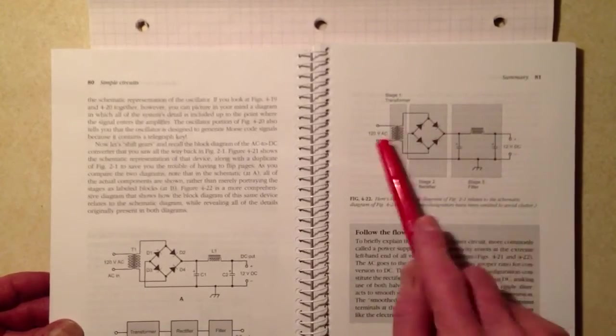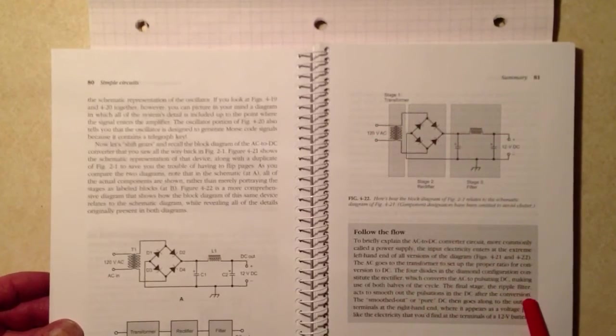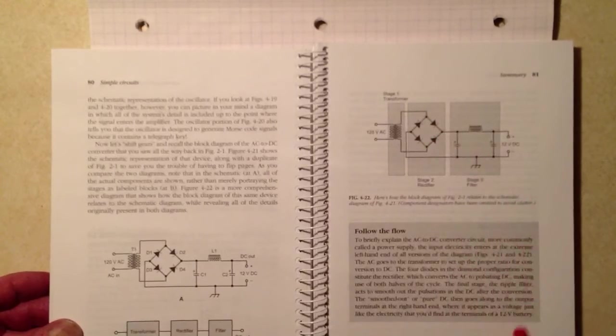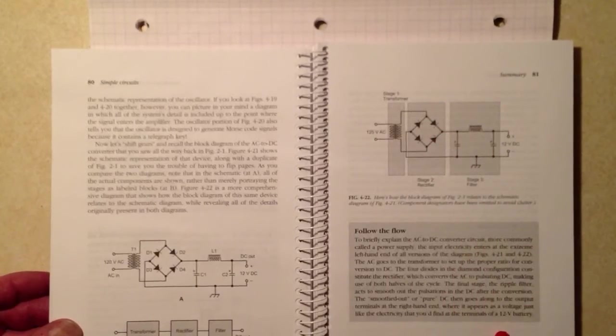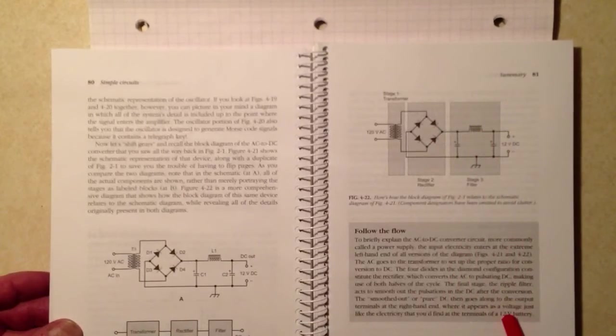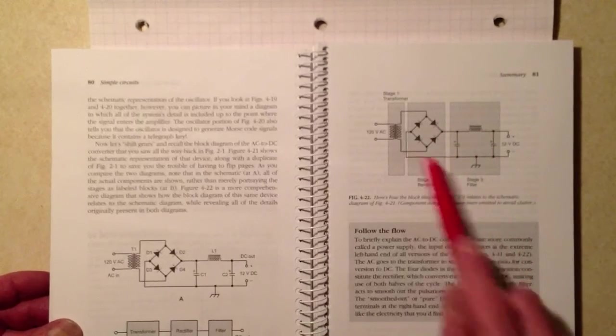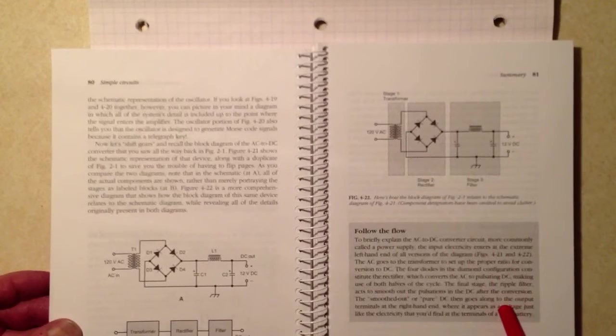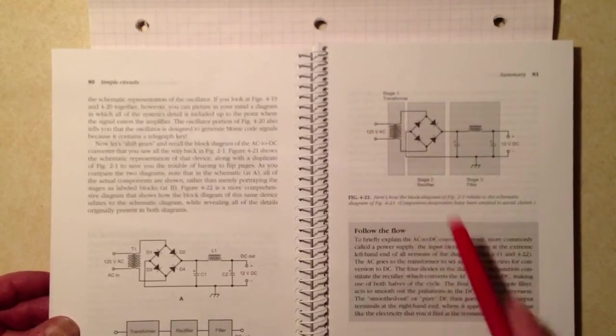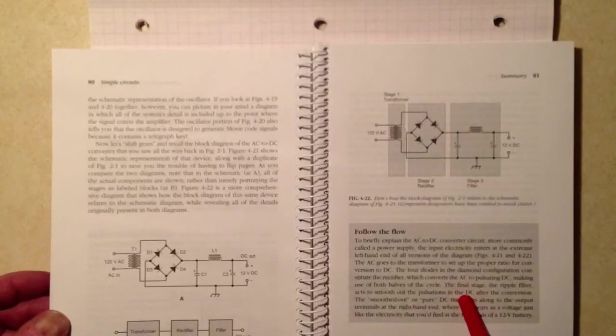There's a little blurb down here called Follow the Flow, which explains how the currents flow through here. This is a bridge rectifier. If you've been watching all of these videos, you will recall that I made a couple of videos explaining in some detail exactly how the bridge rectifier uses four diodes to produce pulsating direct current from alternating current input.